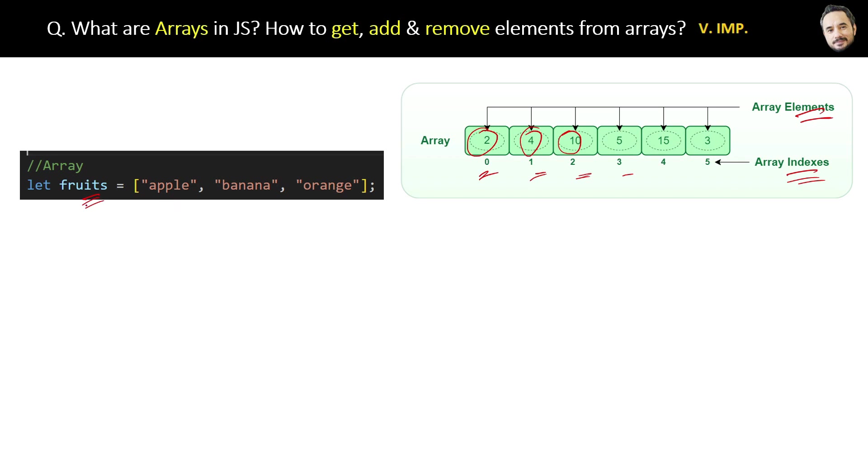So the definition of array is: an array is a data type that allows you to store multiple values in a single variable. Now the question is, why do we need arrays in our projects or applications?